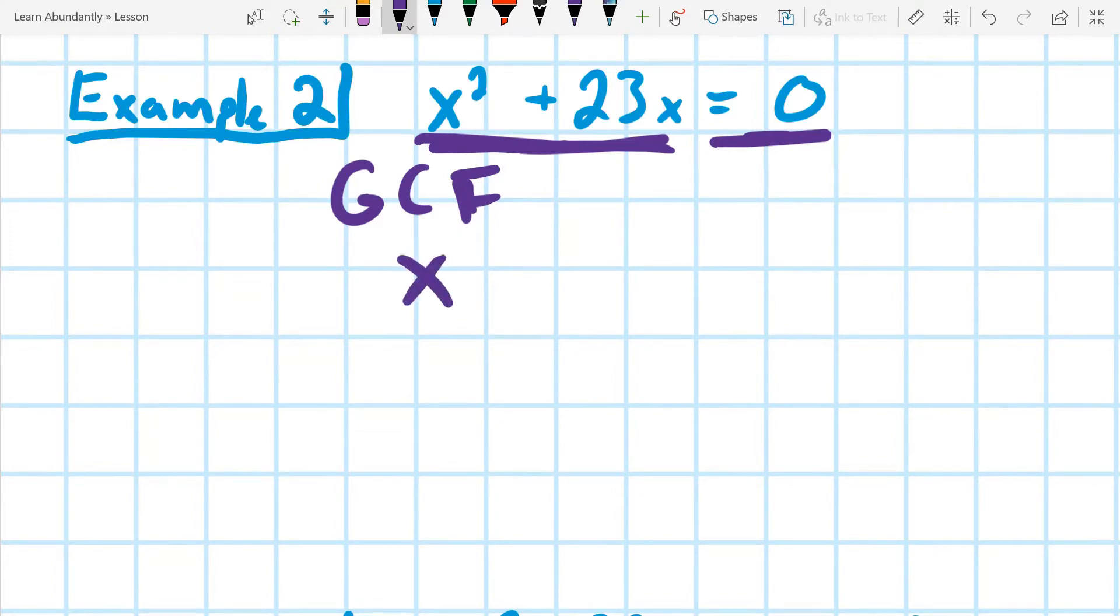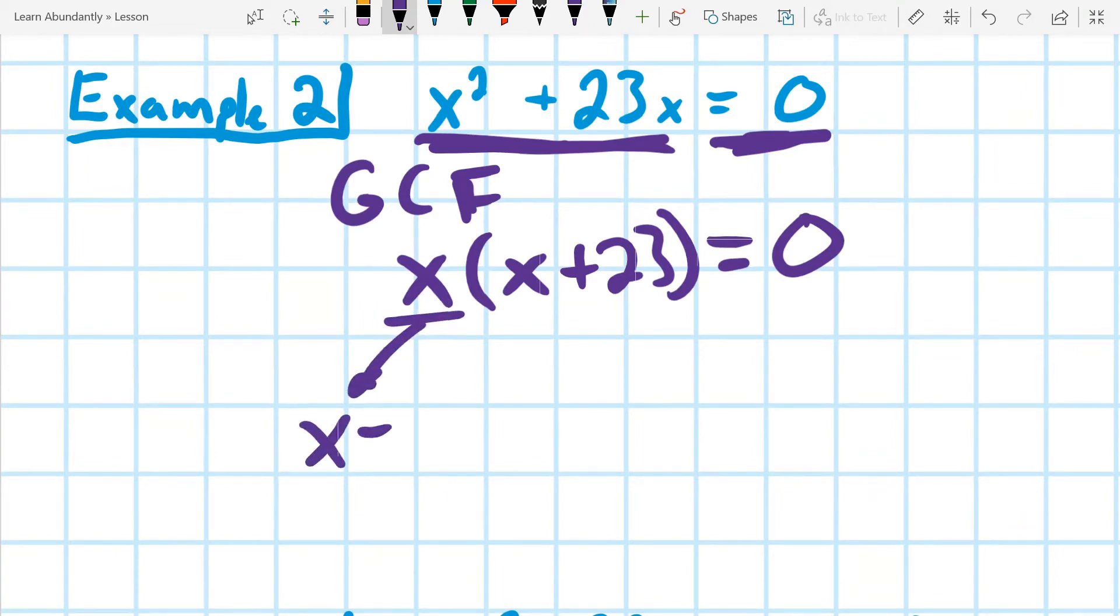So I'd end up with x, and then in parentheses, x plus 23. And it's still equal to zero. Our zero product property says that I can split that up into two equations, the first one being the most simple, x equals zero.